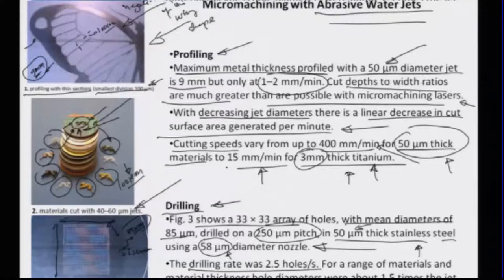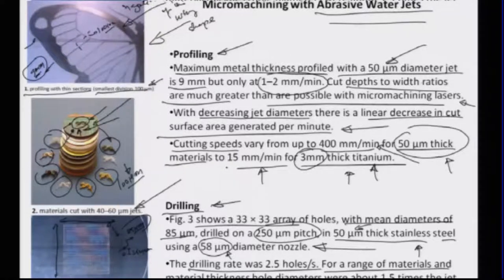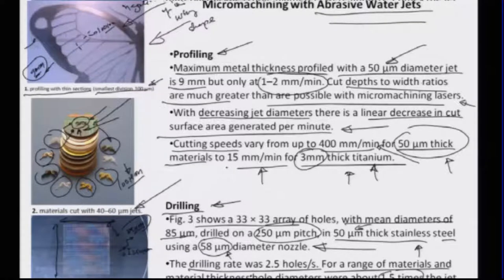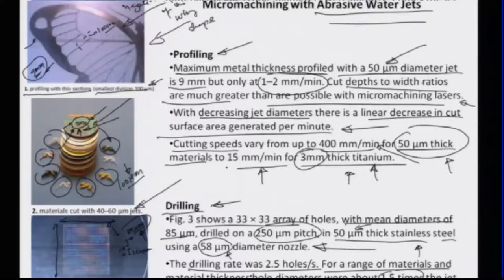The drilling rate in this particular case was about 2.5 holes per second, giving a sense of the rastering or scanning rate of the beam. For a range of materials and material thicknesses, the material thickness to hole diameter ratio is typically about 1.5 times the jet diameter. So if the jet diameter is about 120 micrometers the hole size is about 85 micrometers. Such is the power of abrasive water jet for doing microstructuring and microprocessing.